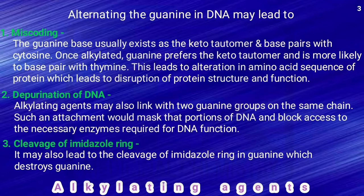The second effect is depurination of DNA. The alkylating agent may link two guanine groups on the same chain. Such cross-linking would mask that portion of DNA and block access to the necessary enzymes required for DNA function — this is called depurination. The third effect is cleavage of the imidazole ring in guanine, which destroys the guanine.